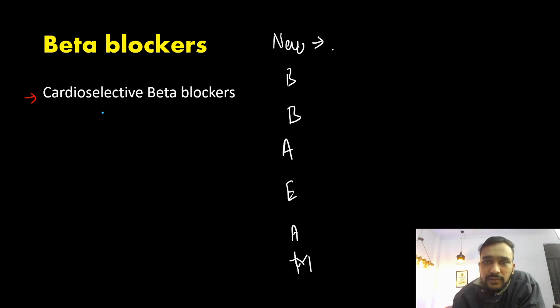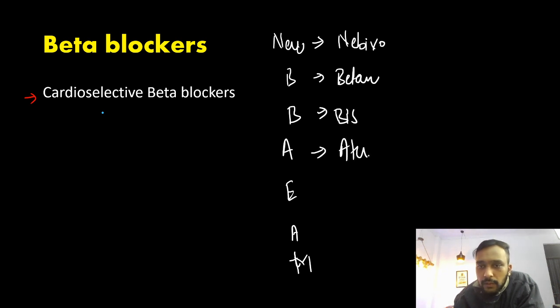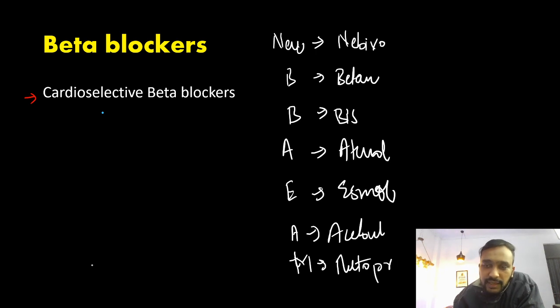These are your nebivolol, then you have betaxolol, you have bisoprolol, atenolol, esmolol, which is a short-acting beta blocker, then you have acebutolol, and finally metoprolol. These are your cardioselective beta blockers.